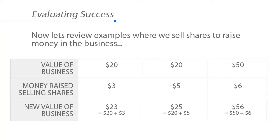If the value of the business is $20 and we sell shares and receive $5 in cash for those shares, the value of the business is now $20 plus $5, or $25. If the value of the business is $50 and we sell shares and receive $6 for those shares, the new value of the business is now $50 plus $6, or $56.